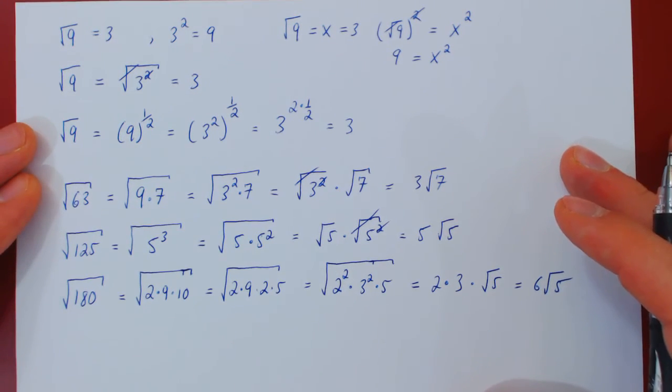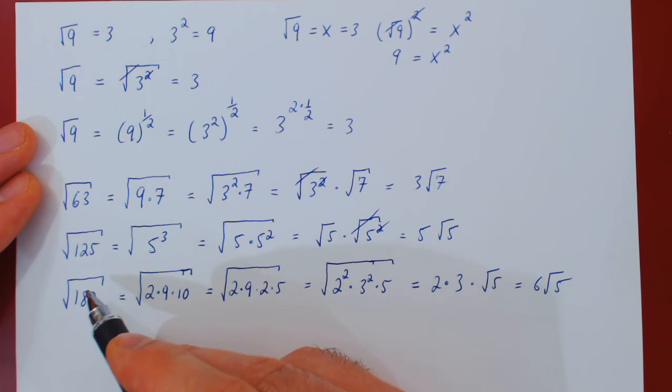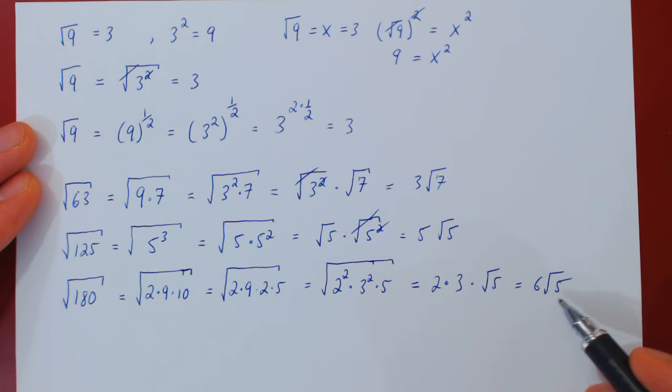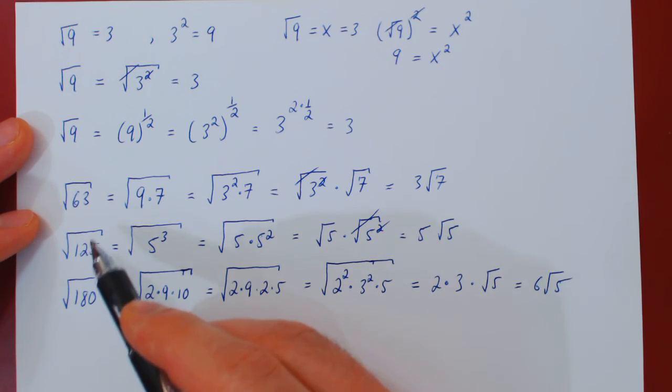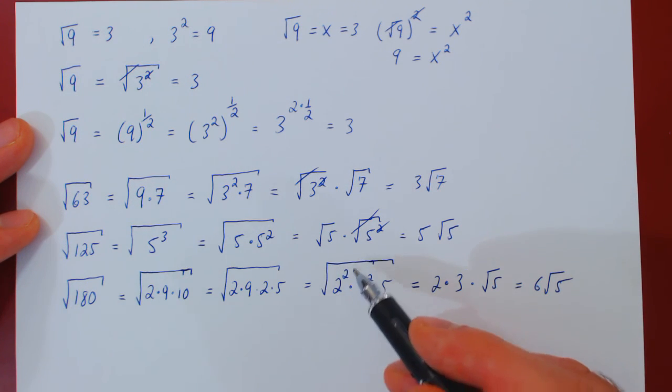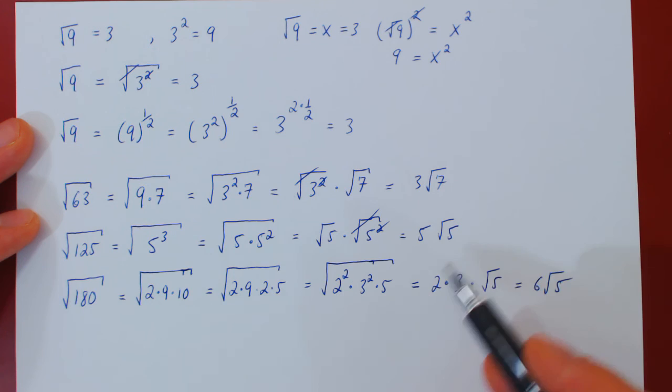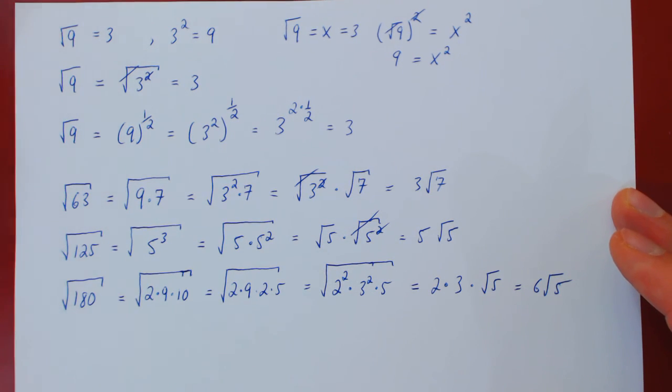So whenever you have the square root of an integer, to simplify, to obtain an expression where the square root is on the smallest possible integer, you have to try and factor the integer and locate perfect squares as some of its factors. And those will be the factors that will cancel the square root. And that's it.